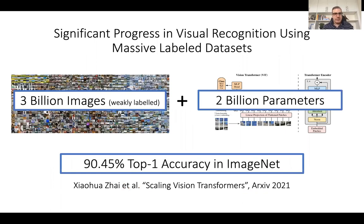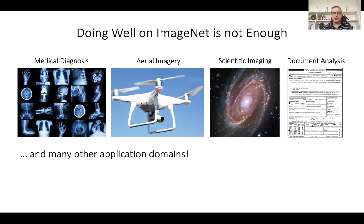As you know, there has been amazing progress in visual recognition recently using massive labeled datasets. The last paper I saw on archive has a method that uses 3 billion weakly labeled images for training a vision transformer with 2 billion parameters, and it achieves 90% top-one accuracy on ImageNet. So this is very impressive. However, doing well on ImageNet is not enough, and the reason is that the visual world is comprised of so many different application domains for which ImageNet models may not generalize well.